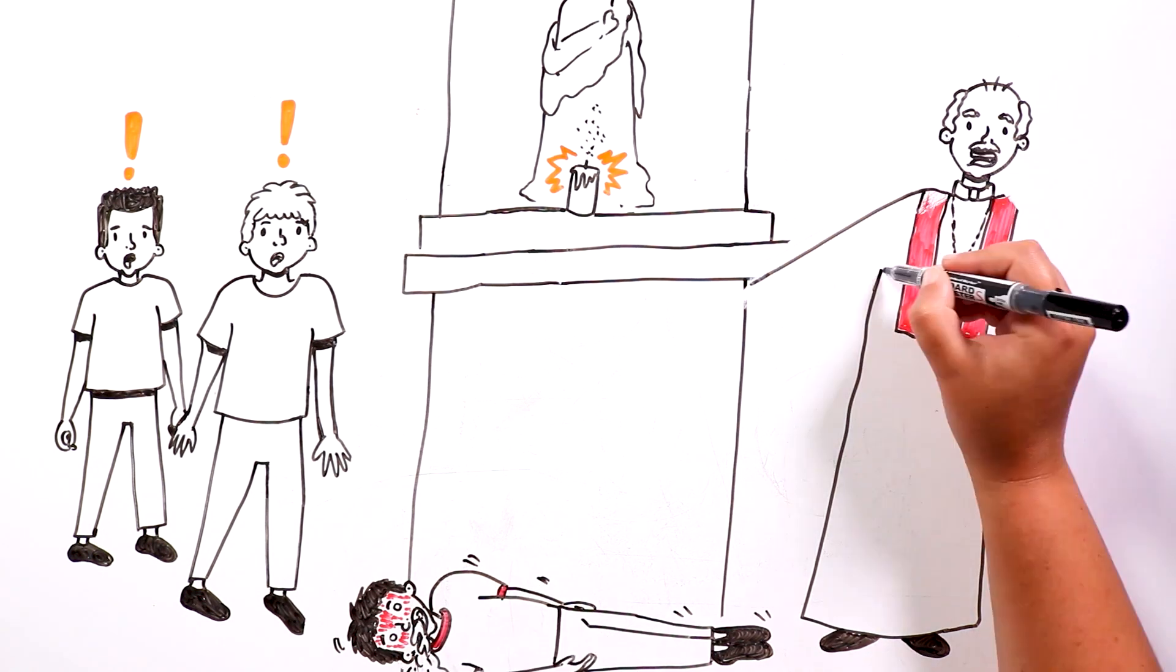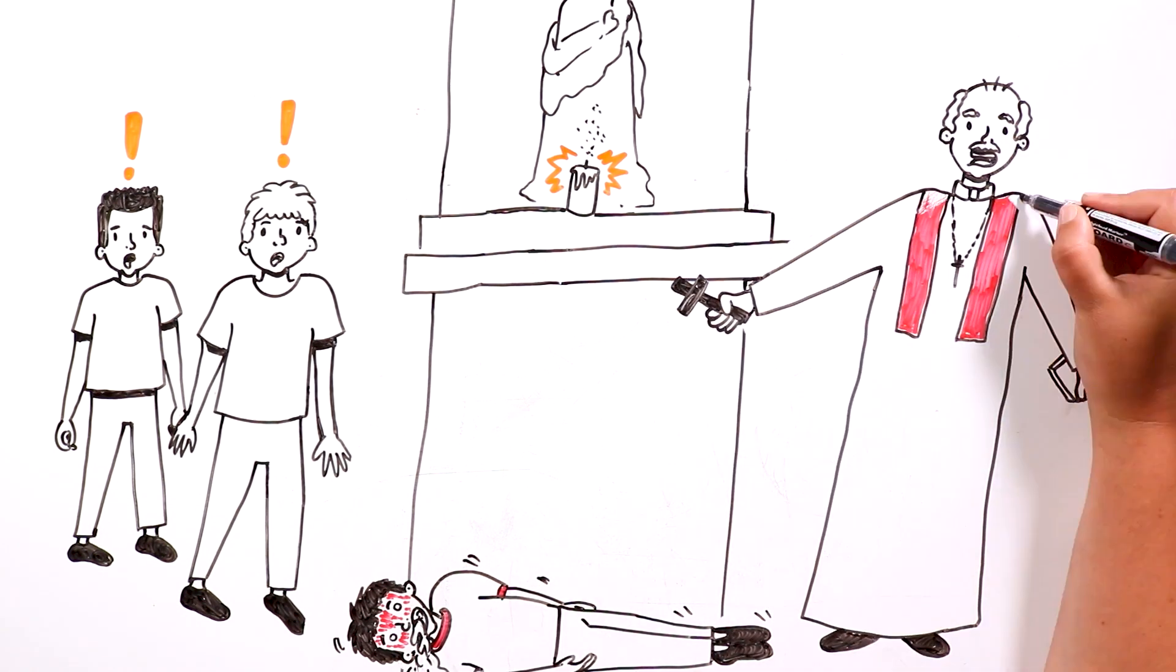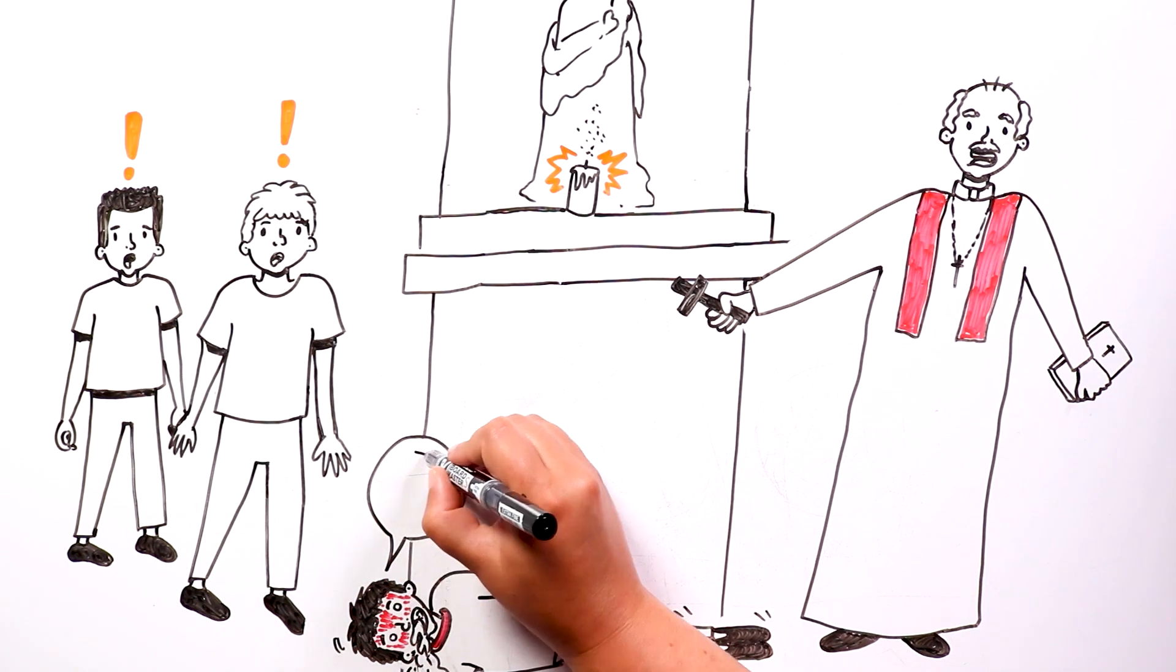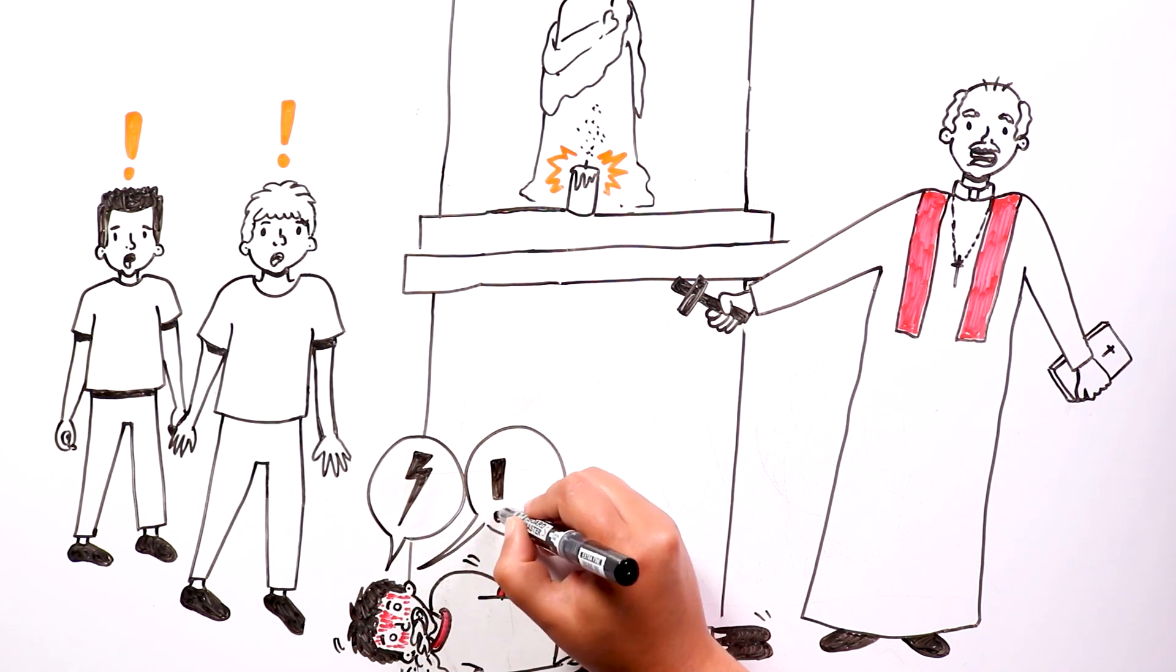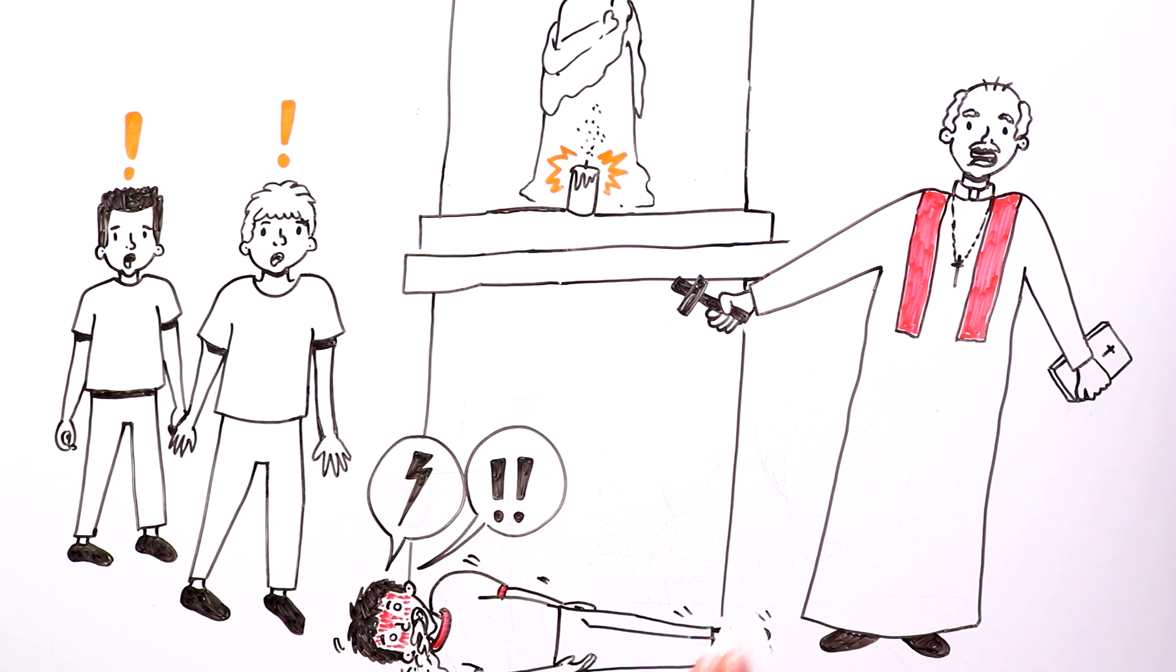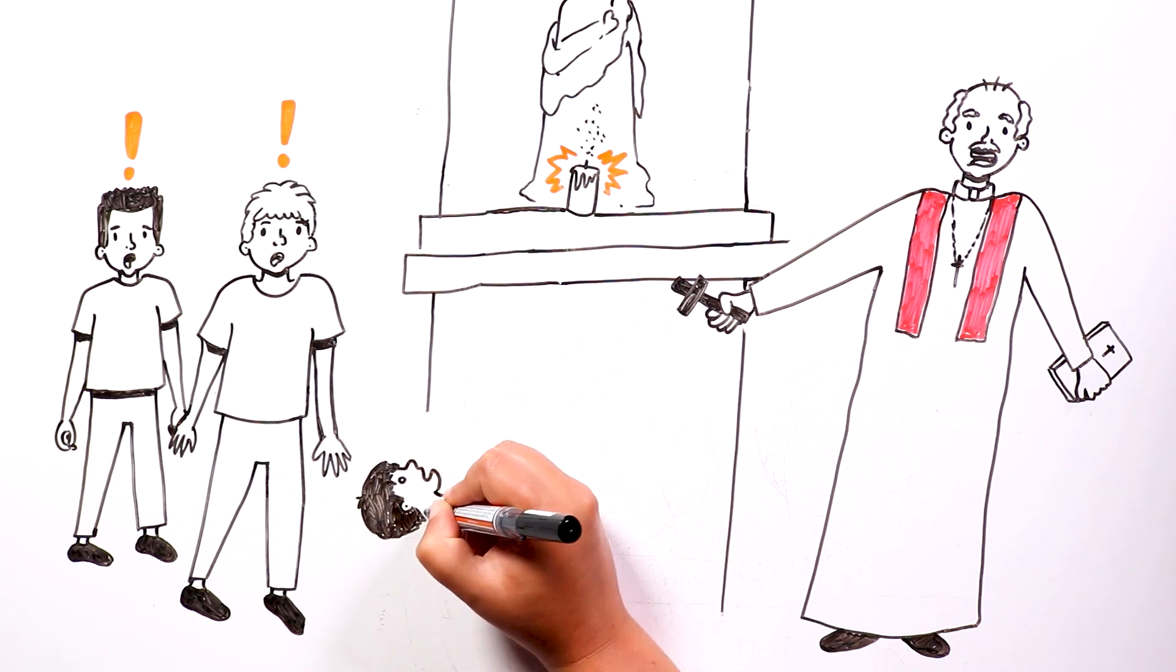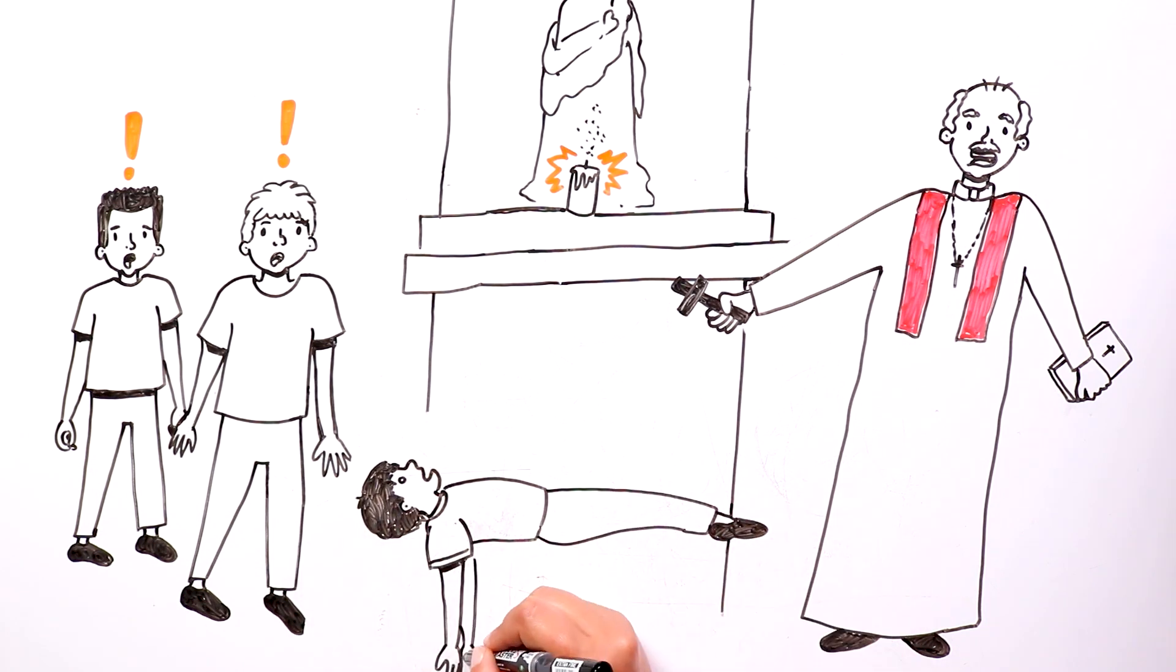The priest quickly approached Santiago to exorcise him, while the boy's voice turned deeper and his screams of pain became more intense. His body then started levitating, and he started to speak in a language nobody could understand.